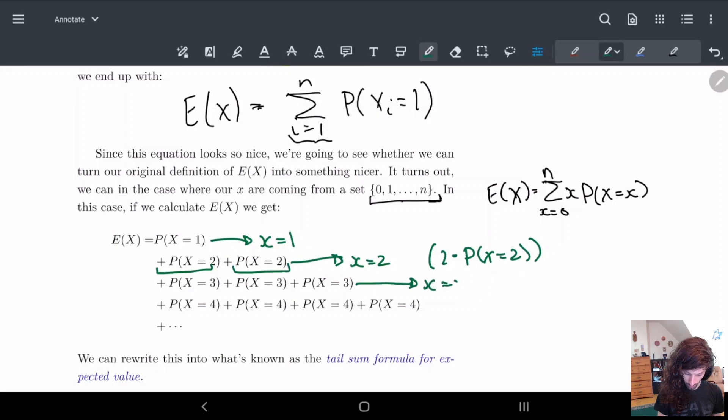We can do this for all of them. For X equals 3 we have three of them, so we have 3 times P(X = 3): 1, 2, 3. That's basically what we have.